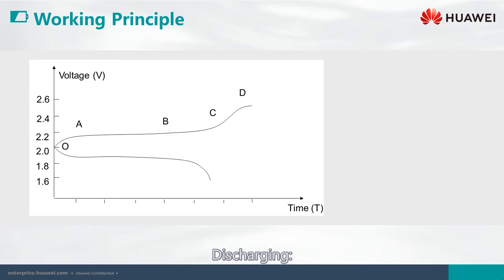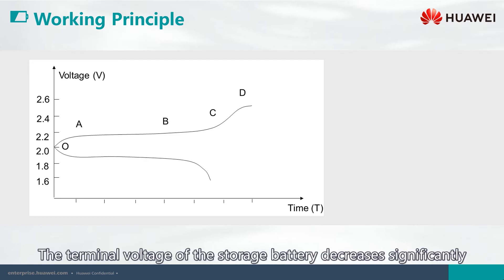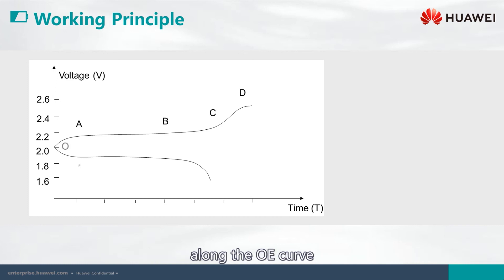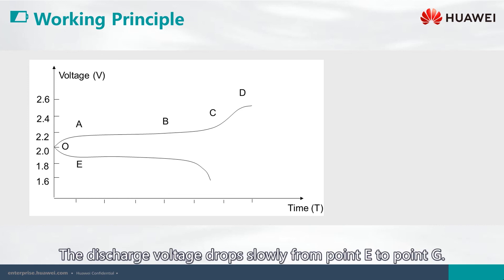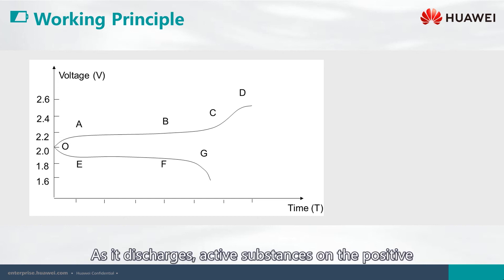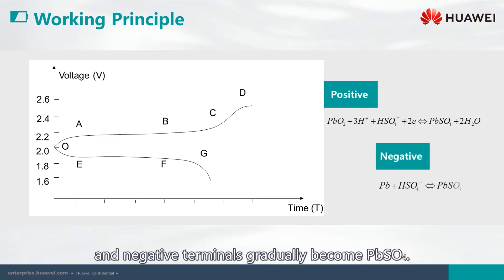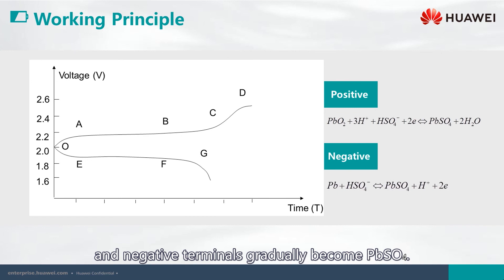During discharging, the terminal voltage of the storage battery decreases significantly along the OA curve. The discharge voltage drops slowly from point E to point G. As it discharges, active substances on the positive and negative terminals gradually become lead sulfate.